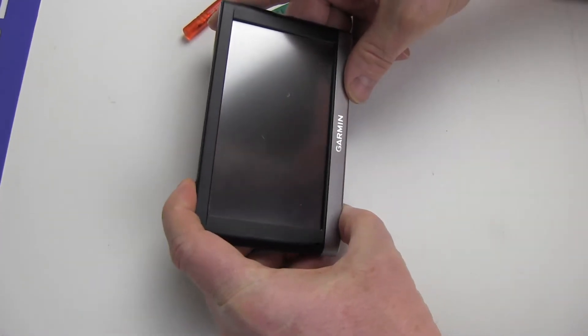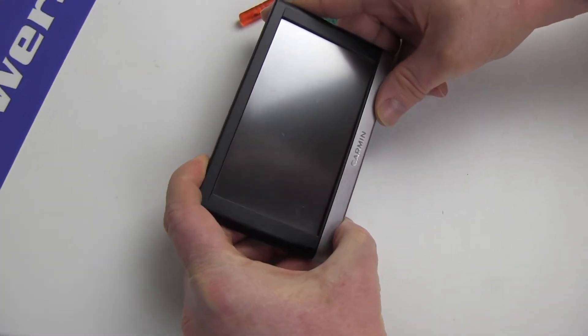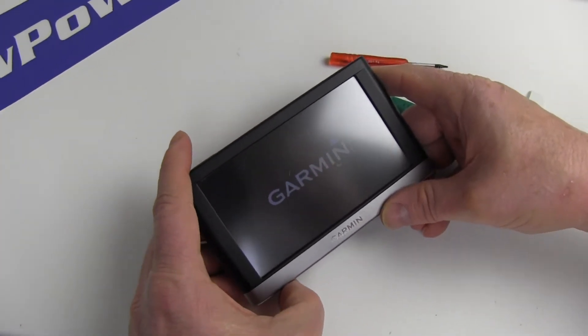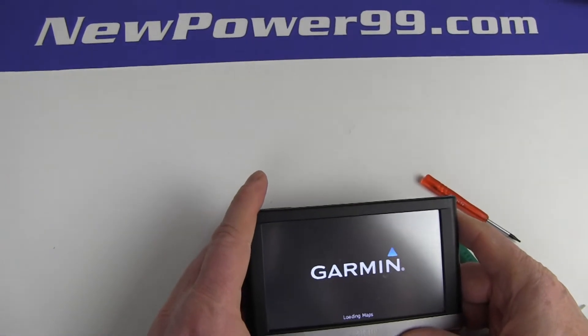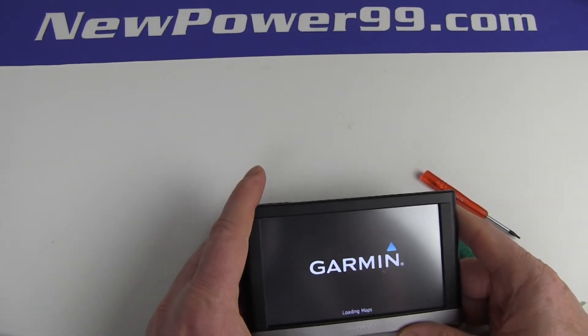Turn on your Garmin Nuvi GPS with its newly installed battery from NewPower99.com. Your Garmin Nuvi should now work perfectly. Be sure to charge the device for at least two hours before continuing to use.